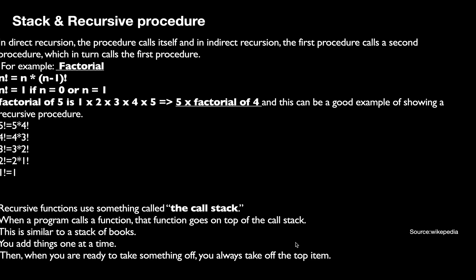A simple idea about stack and recursive procedures: in direct recursion, the procedure calls itself; in indirect recursion, the first procedure calls a second procedure which in turn calls the first. For example, using a recursive procedure for factorial: n! = n × (n−1)!, with the base condition that n! = 1 if n = 0 or n = 1.